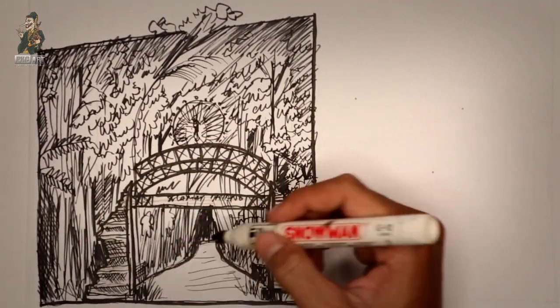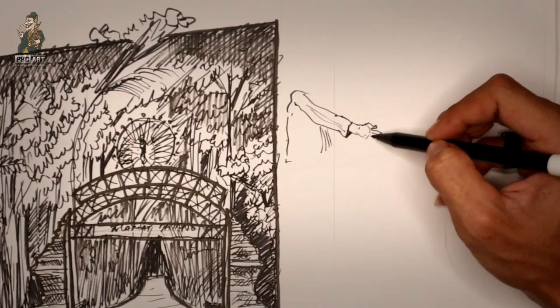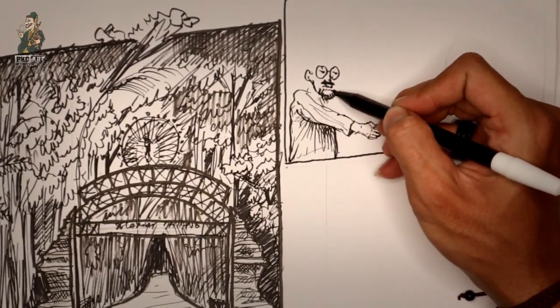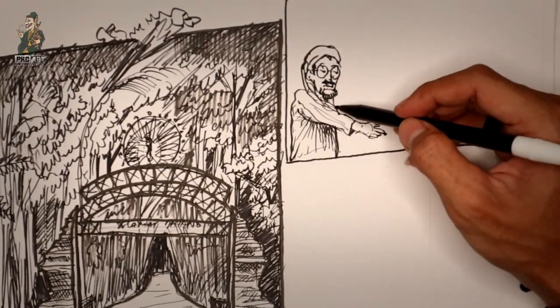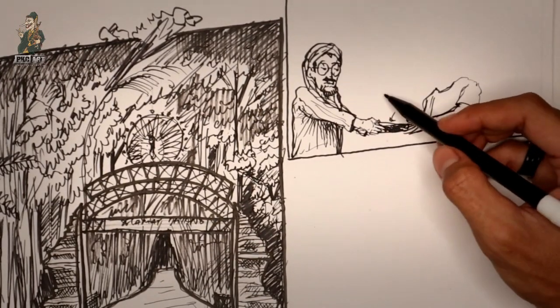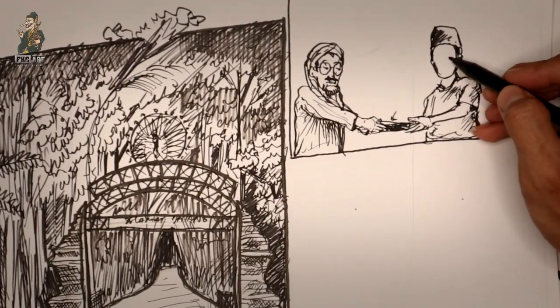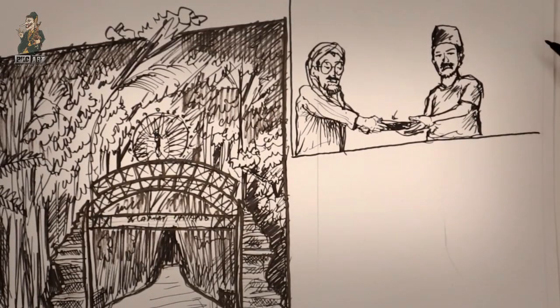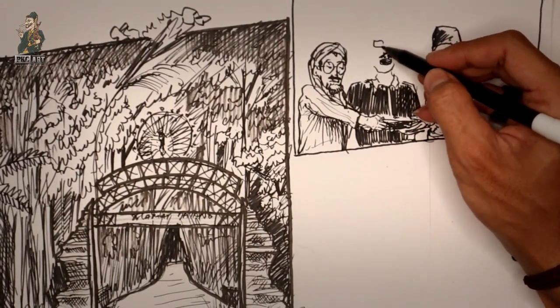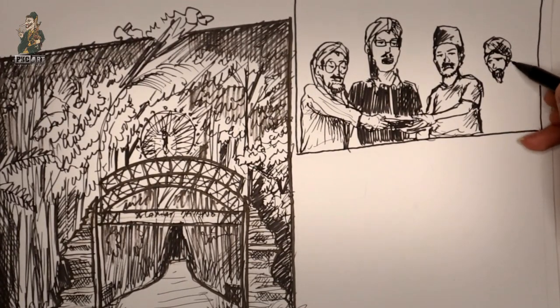Sekelompok orang yang mengaku dukun mendeklarasikan Persatuan Dukun Nusantara atau Perdunu di sebuah gedung di Desa Sumpedarum, Kecamatan Songgon, Kabupaten Banyuwangi, Jawa Timur. Yang bikin heboh, perkumpulan ini berencana menggelar festival yang mempromosikan destinasi wisata mistis di Banyuwangi.